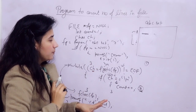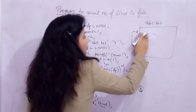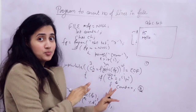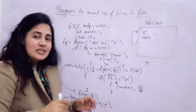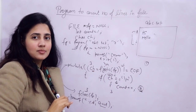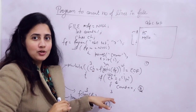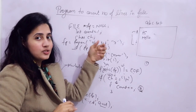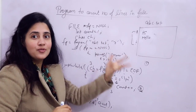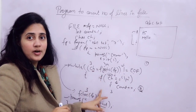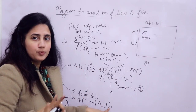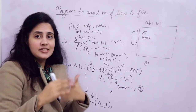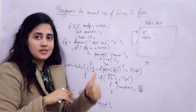Now suppose I ask you to count number of lines as well as number of characters — I think you can modify this program. You just need to declare one more variable to count characters and add a single line inside the while loop, then print it. This is an assignment for you. You can send me the code in the comment box or on my Instagram account as a screenshot.